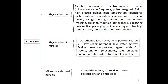Physical hurdles include aseptic packaging and electromagnetic energy, which includes microwave, radio frequency, pulsed magnetic fields, and high electric field pulses. High temperature methods include flora blanching, pasteurization, sterilization, evaporation, extrusion, baking, and frying. Ionizing radiation and low temperature methods including freezing and chilling are also physical hurdles, as is modified atmosphere packaging.